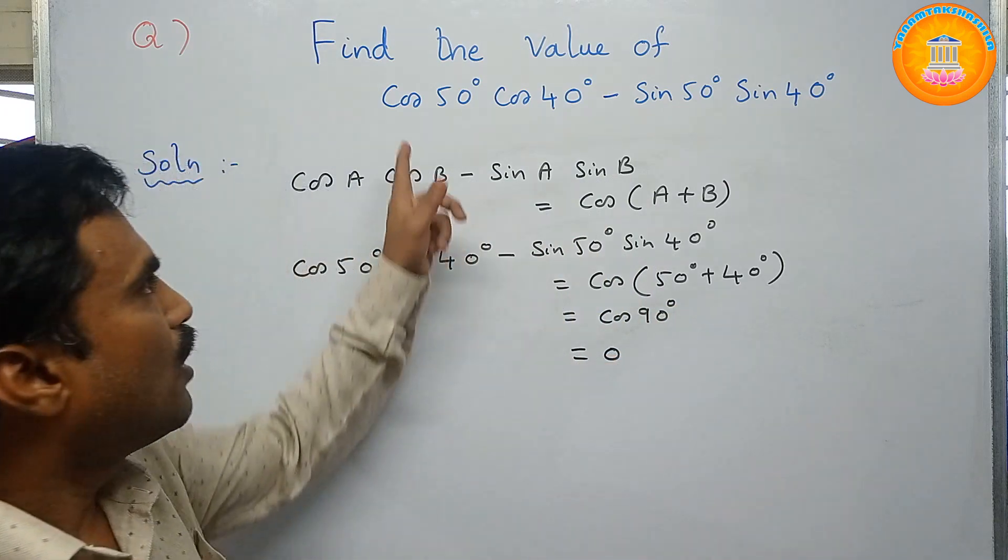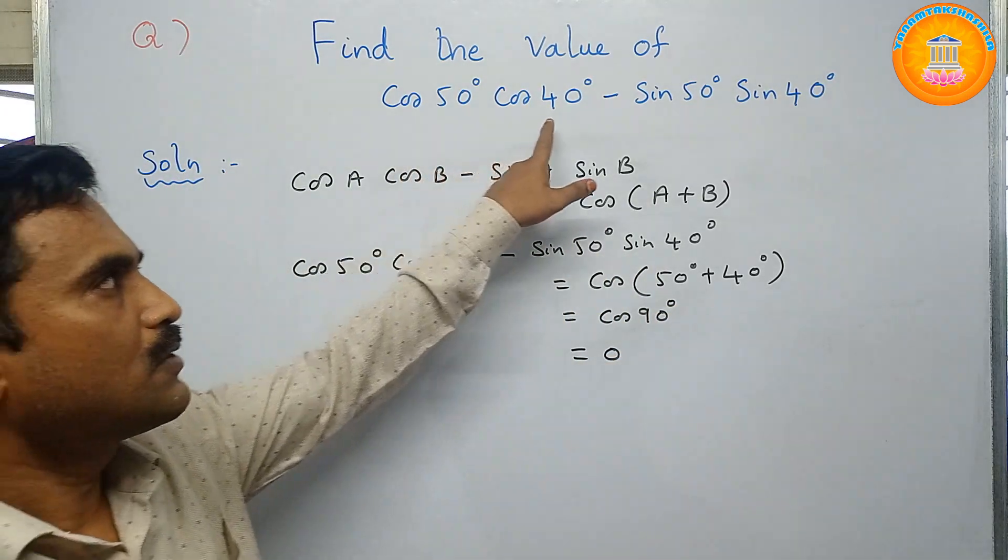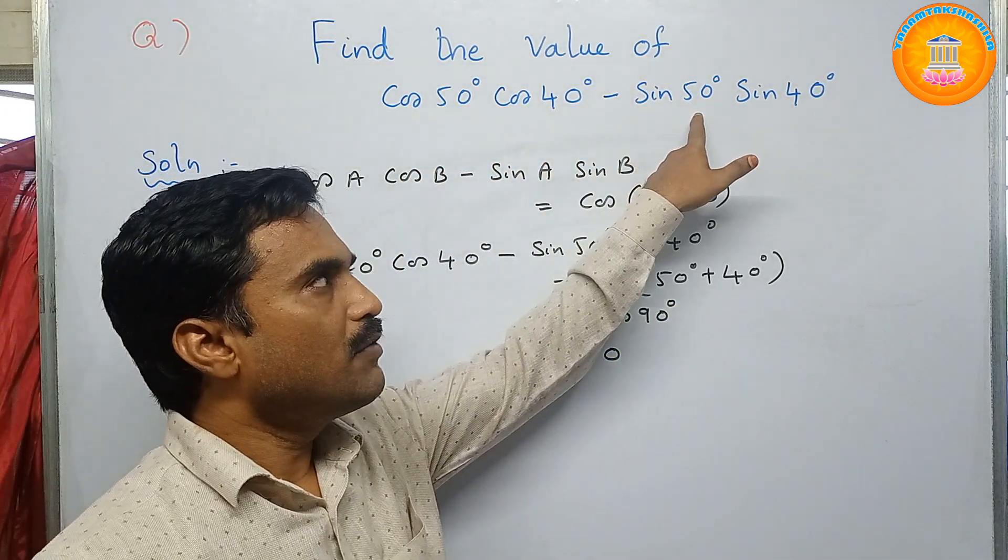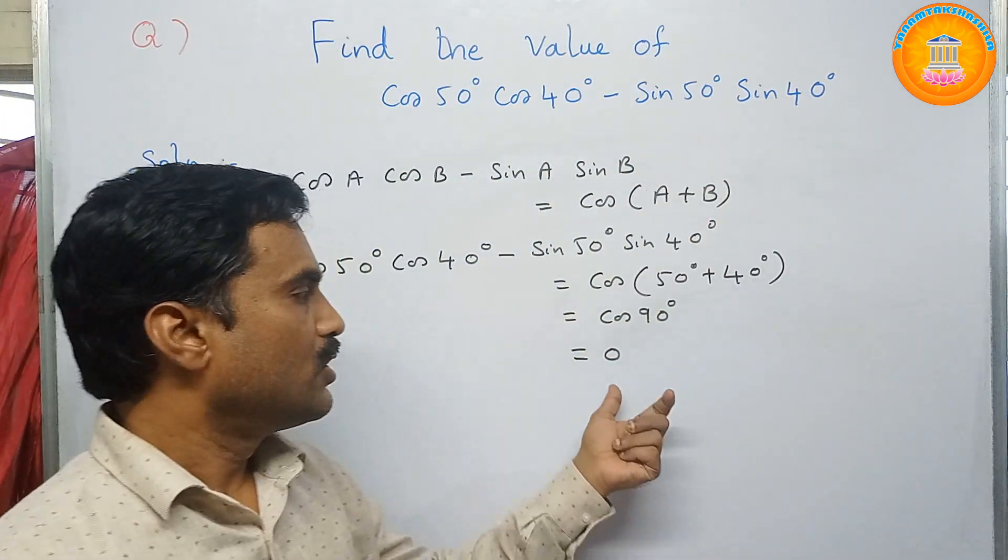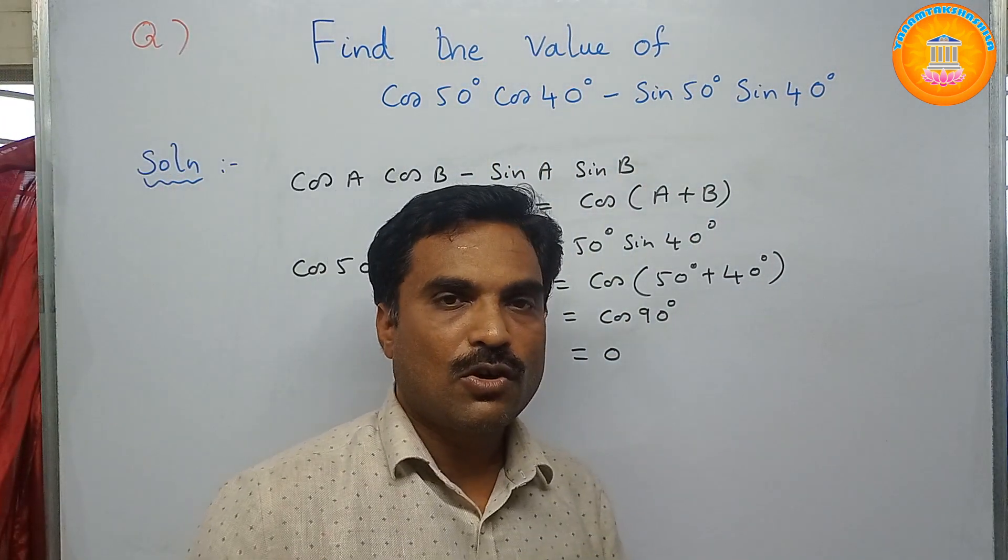So, therefore, the value of cos 50 degree cos 40 degree minus sin 50 degree sin 40 degree is 0. This is how you need to solve this problem.